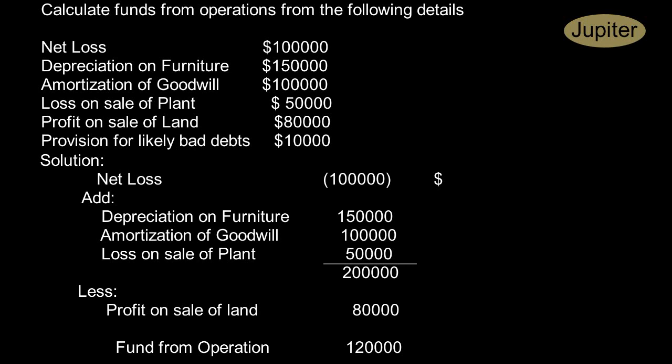Amortization of goodwill - it doesn't make any changes to working capital, it is just writing off our goodwill, so we have added it. Loss on sale of plant - this is related to fixed assets, sale of fixed assets, so it is not coming under our day-to-day operations.